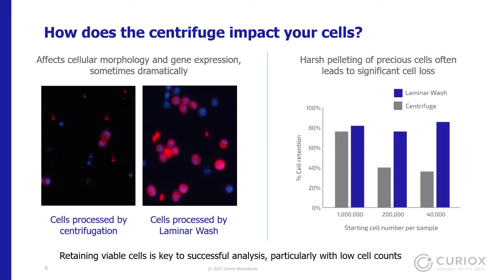A graph shows that the lower the starting cell number, the worse centrifuge cell retention gets. At a million cells you get decent retention, but at 40,000 or 20,000 cells, retention really drops off because the pellet is so small. With laminar wash, we consistently see high cell retention with no preferential loss of cell types, and the system can match or improve cell retention especially at very low starting cell numbers.